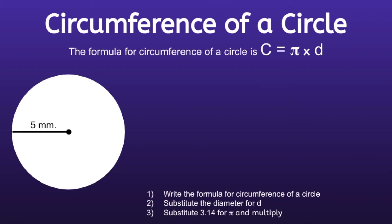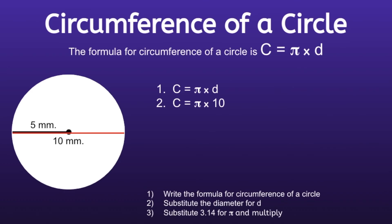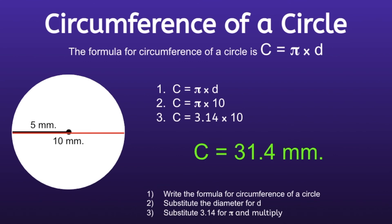Example number 2. Step 1: write the formula, C equals pi times d. Step 2: substitute the diameter for d. If we look at this circle, they give us the radius, which is 5. Remember, the diameter is all the way across the circle and is twice as big as the radius. So we find the diameter by multiplying 5 by 2, giving us a diameter of 10. Step 3: substitute 3.14 for pi and multiply. 3.14 times 10 equals 31.4. So the circumference of this circle is 31.4 millimeters.